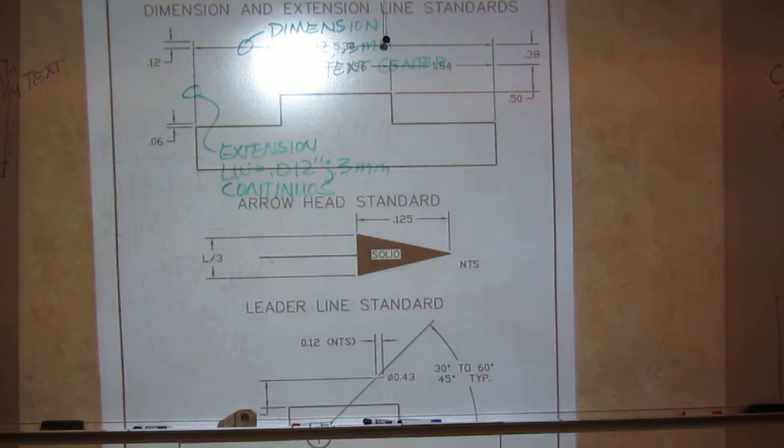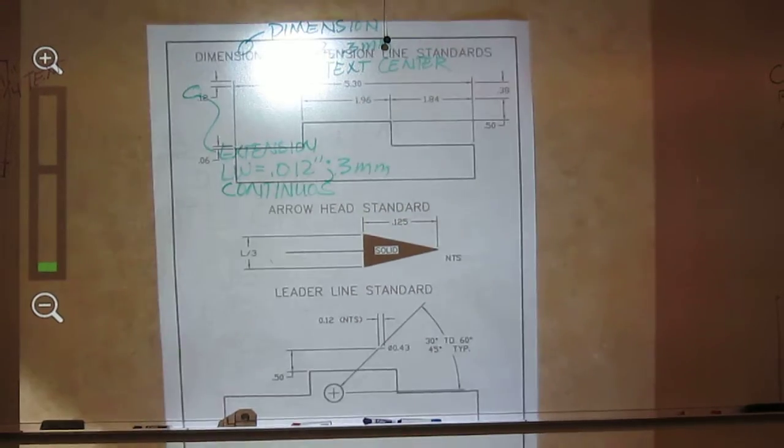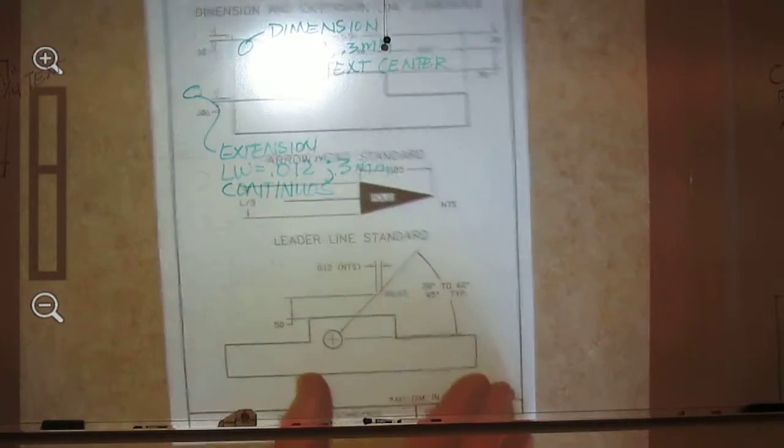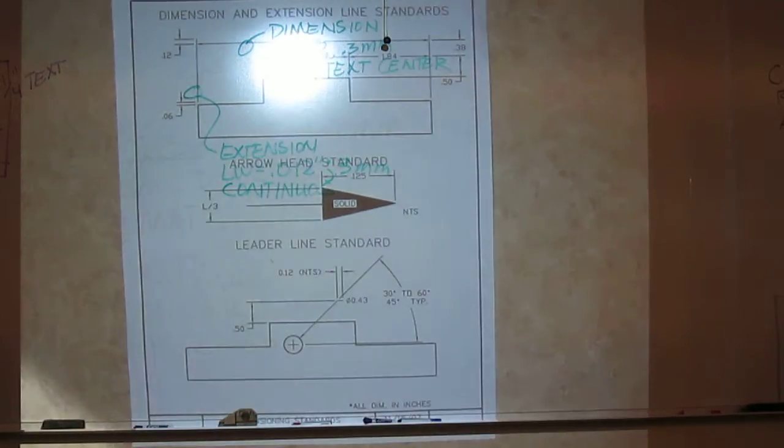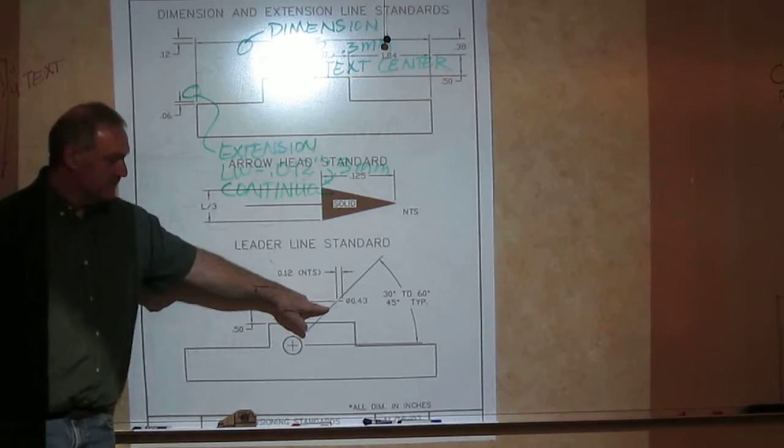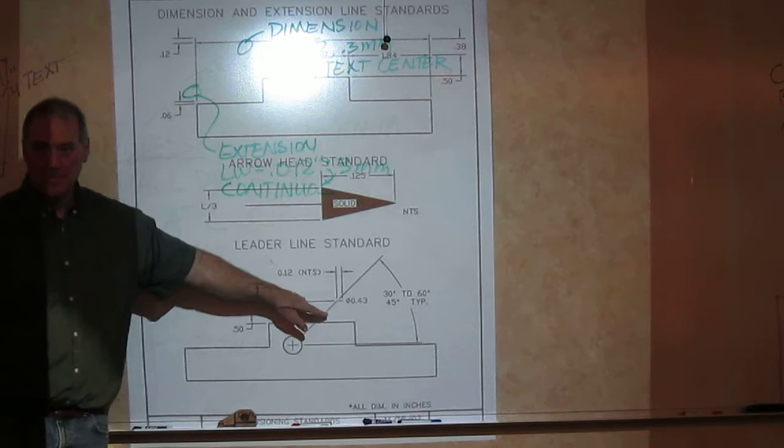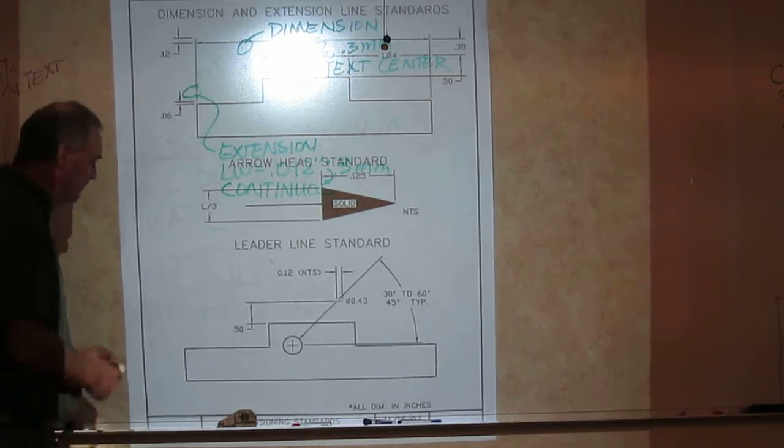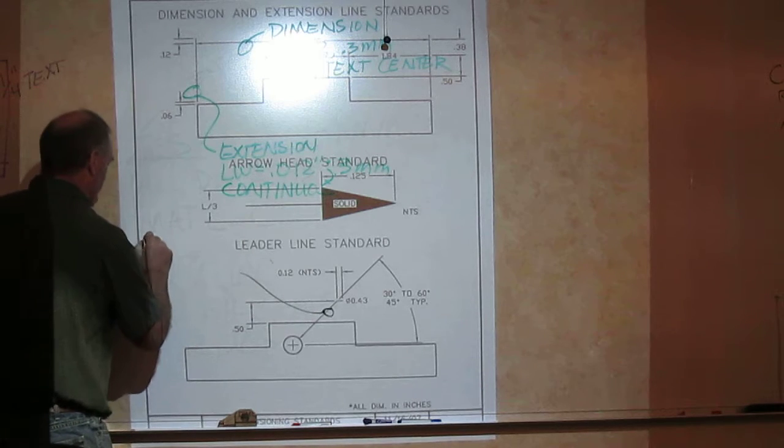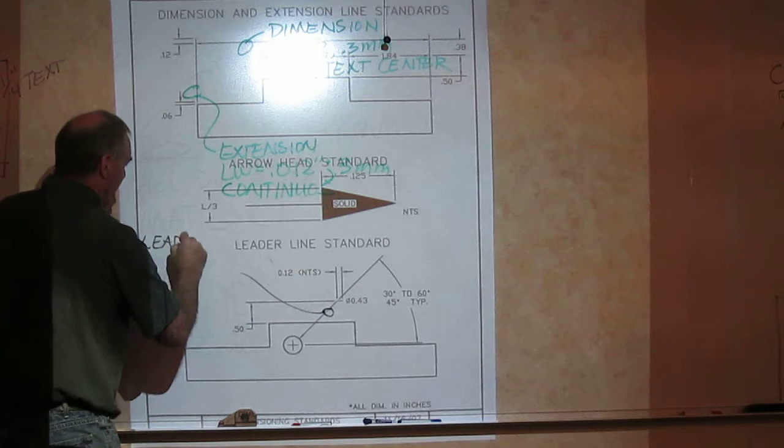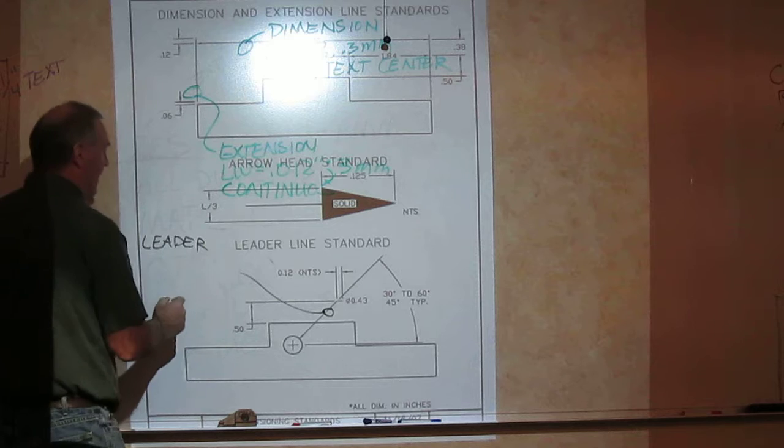Now we have one other line type that we do use here. I'm just going to back this away just a touch. Yeah, I'll just pull it out. Put my little arrow back on there. It's down at the bottom. We call this a leader line right here. So this is a leader line.